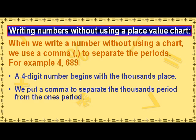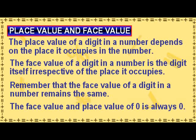When we write a number without using a chart, we use a comma to separate the periods. For example, to write four thousand six hundred eighty-nine, we use a comma after the digit four of the thousands place, followed by digit six for hundreds place, digit eight for tens place, and digit nine for ones place. A four-digit number begins with the thousands place, and we put a comma to separate the thousands period from the ones period.